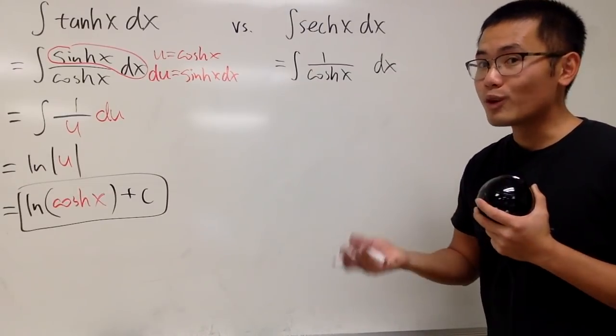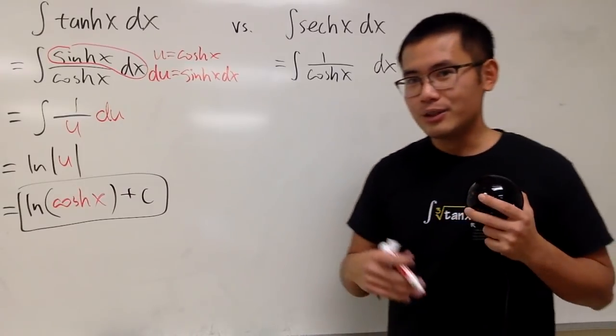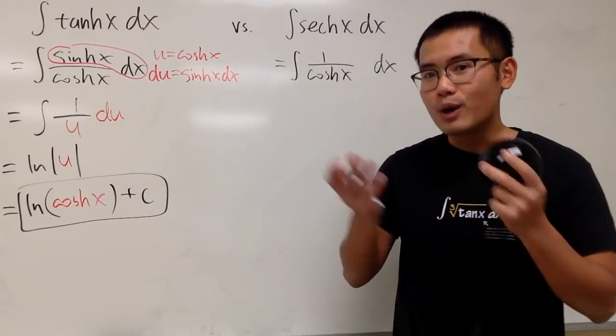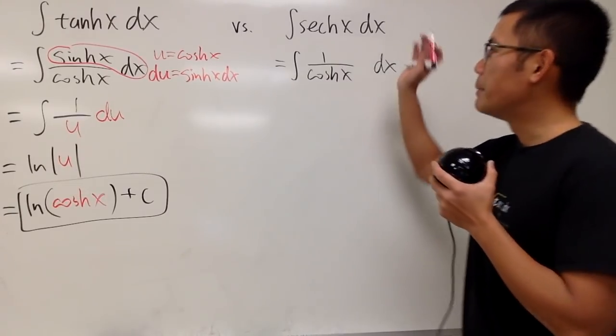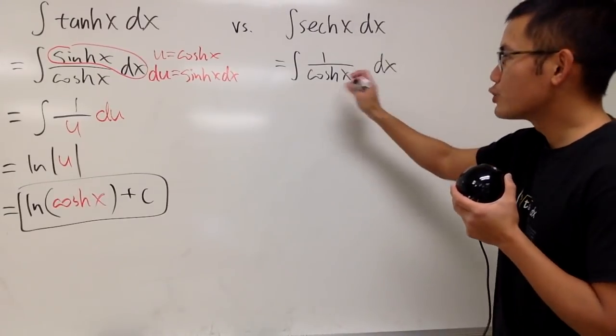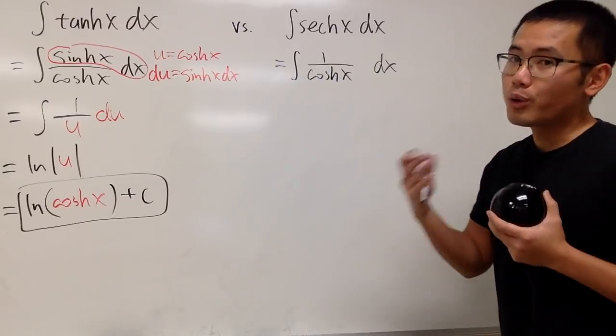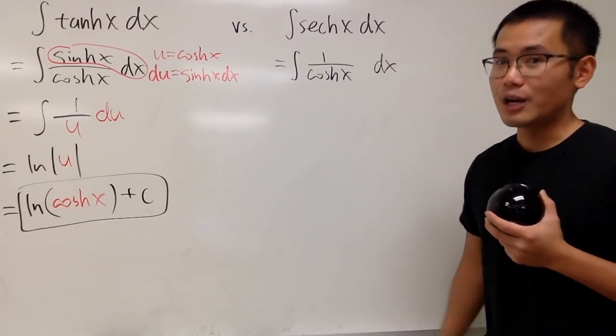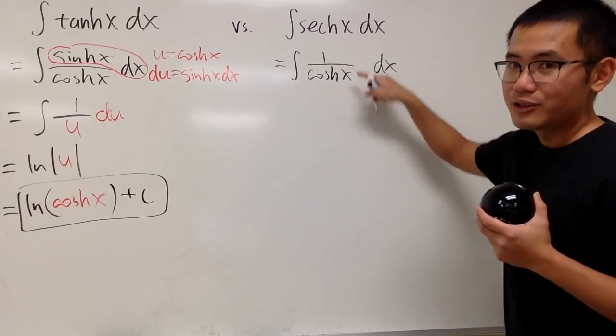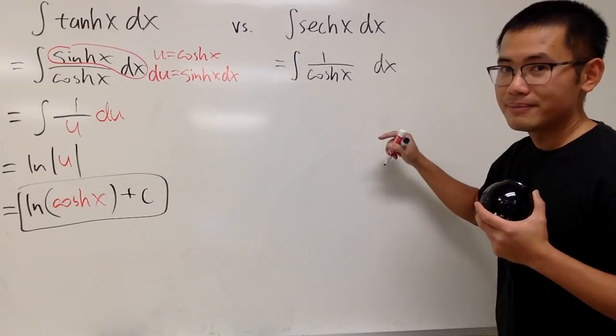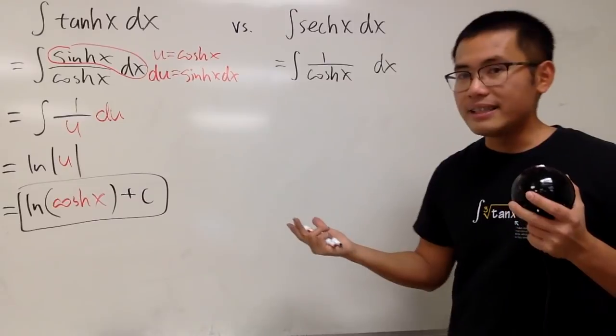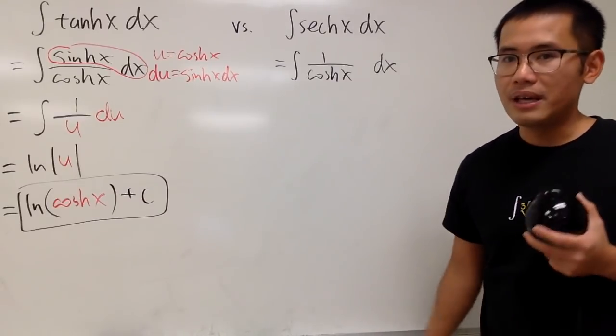We want to have more things to work with. Just like the traditional version where sine and cosine are best friends, with the hyperbolic version, sinh and cosh are best friends. If we have cosh here now, we want to produce sinh to help us out. But I'm not going to multiply sinh on the top and bottom, because on the bottom, sinh x times cosh x is an identity that may not be any good for us.